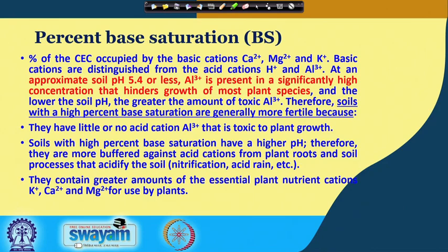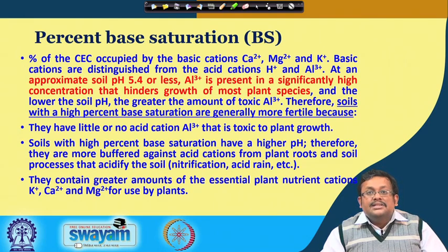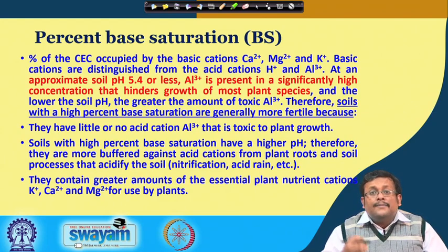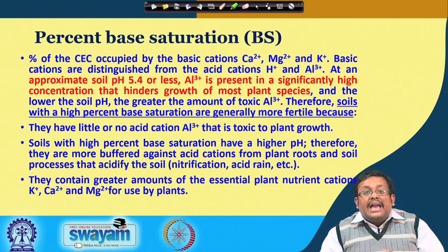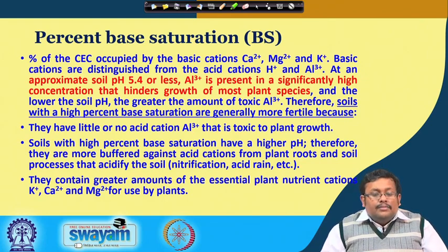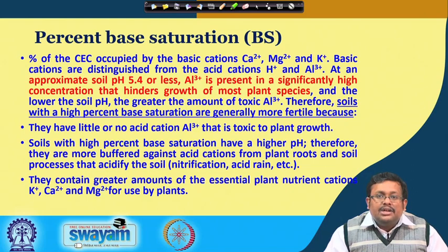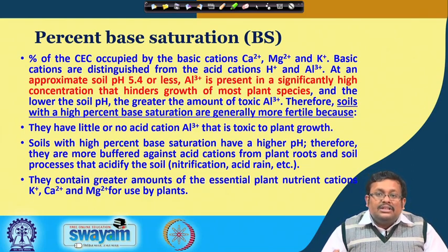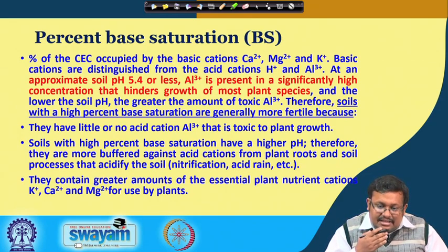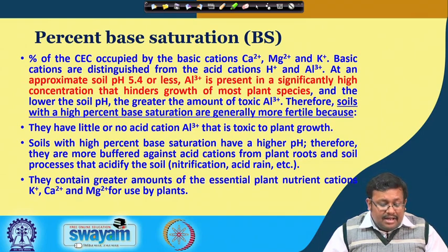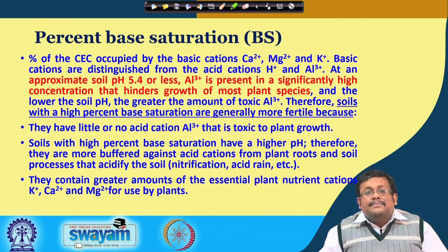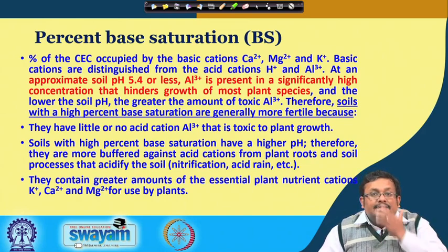At approximately soil pH 5.4 or less, Al³⁺ is present in significantly high concentration, which hinders the growth of most plant species — the lower the soil pH, the greater the amount of toxic Al³⁺. Therefore, soils with high percent base saturation are generally more fertile because high Al³⁺ dominance creates aluminum toxicity. Soils with high percent base saturation have little or no acid cations like Al³⁺ that are toxic to plant growth, meaning they can support plant growth and supply required nutrients.